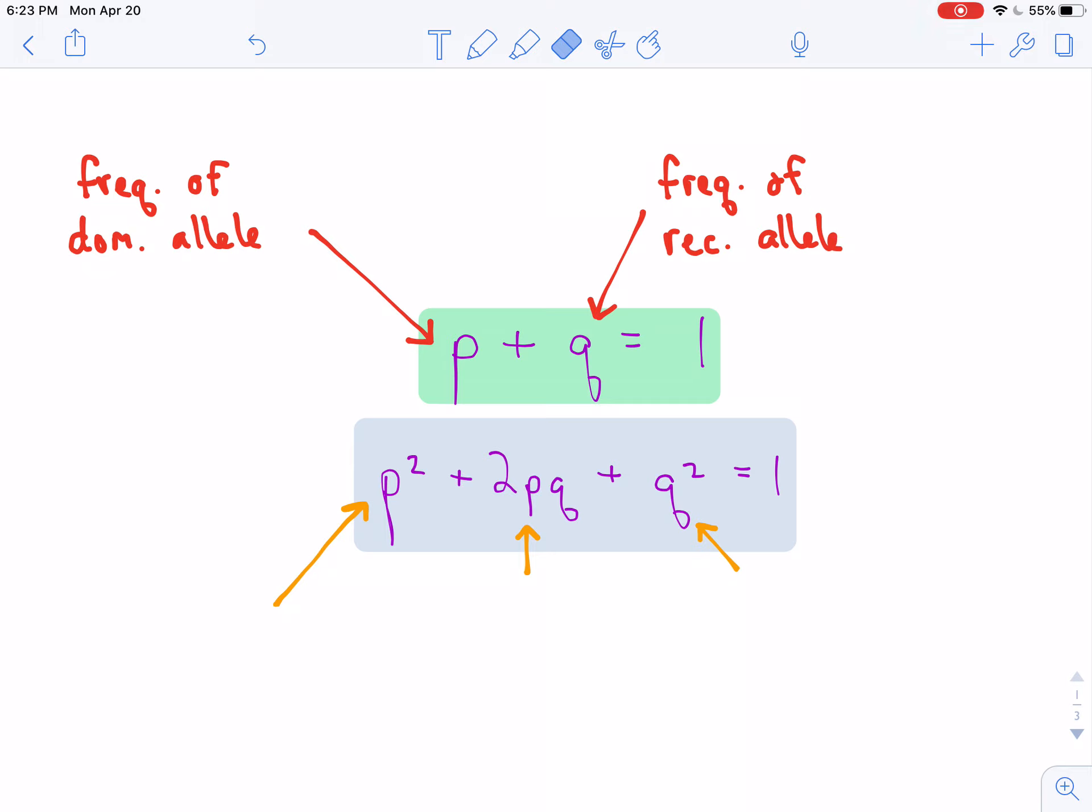Now, if we were to expand this equation out, we can also come up with another one, and the second equation for Hardy-Weinberg equilibrium is p squared plus 2pq plus q squared equals 1, where p squared is the frequency of the homozygous dominant genotype. Going back to our human eye color example, that would be the big B, big B genotype. Q squared would be the frequency of the homozygous recessive genotype, that would be little B, little B. And then 2pq would be the frequency of the heterozygous genotype, like big B, little B.